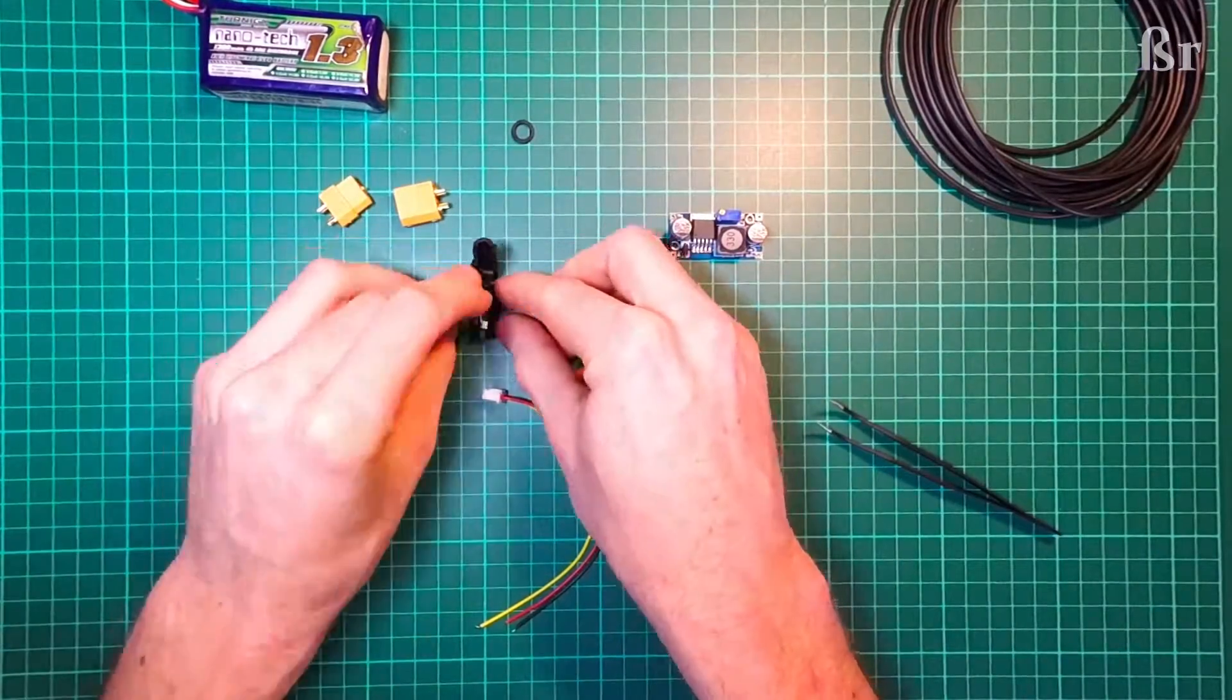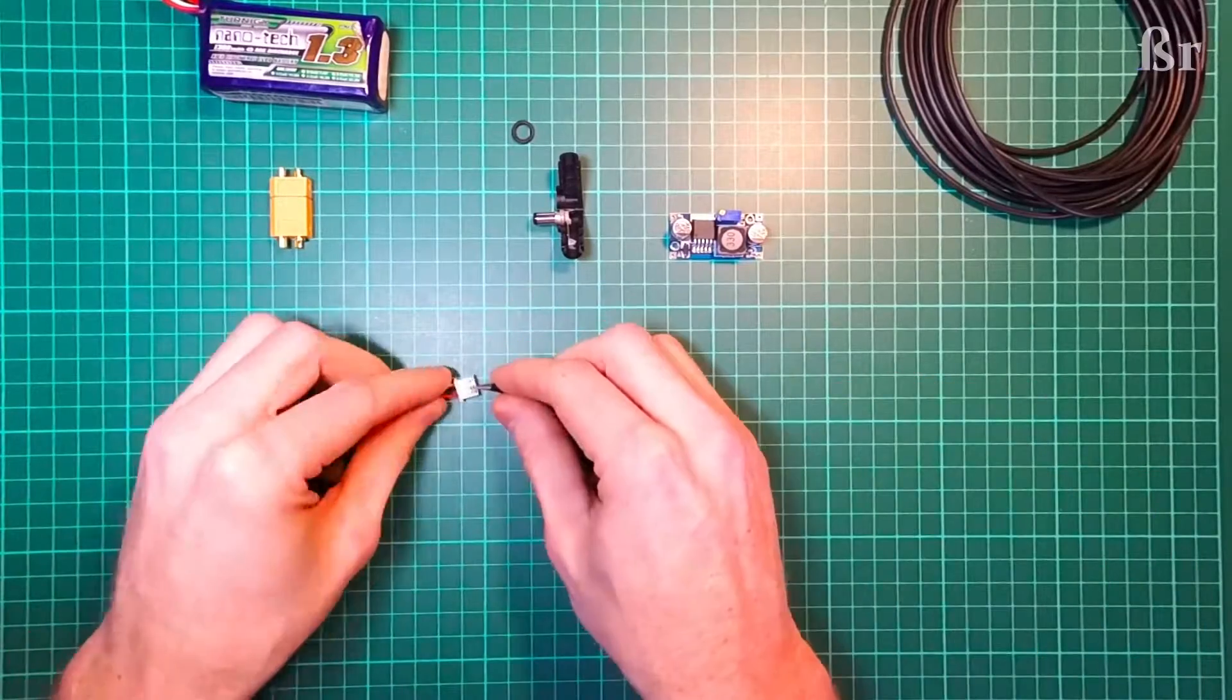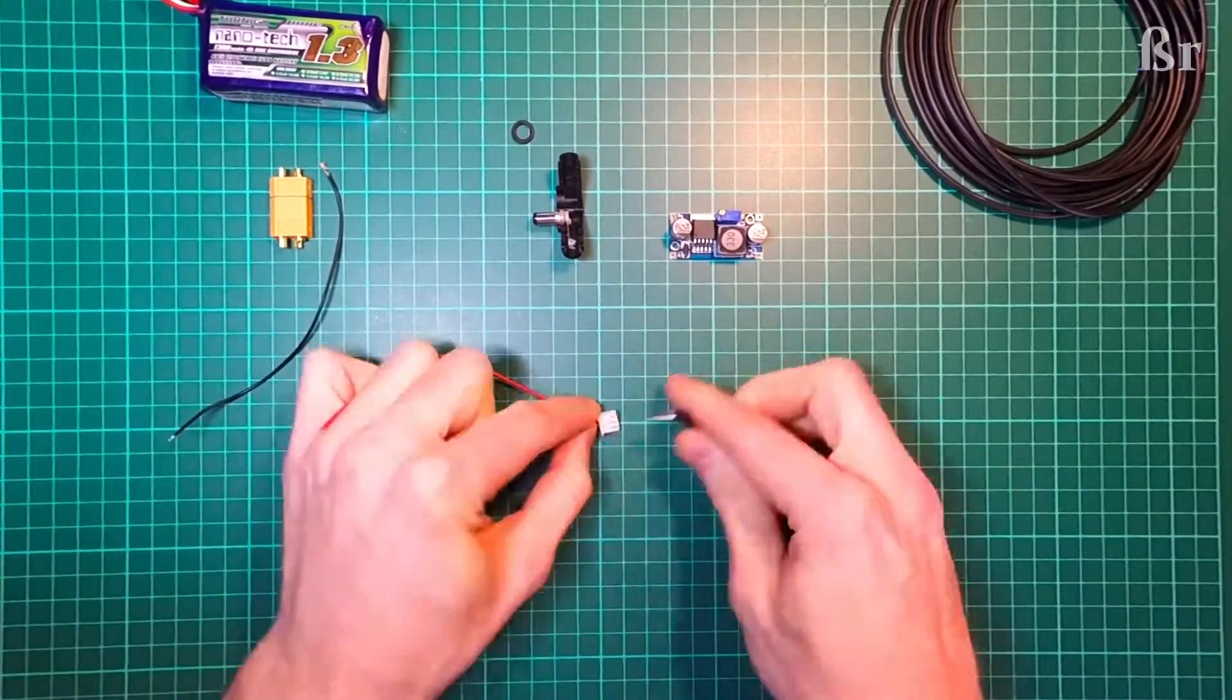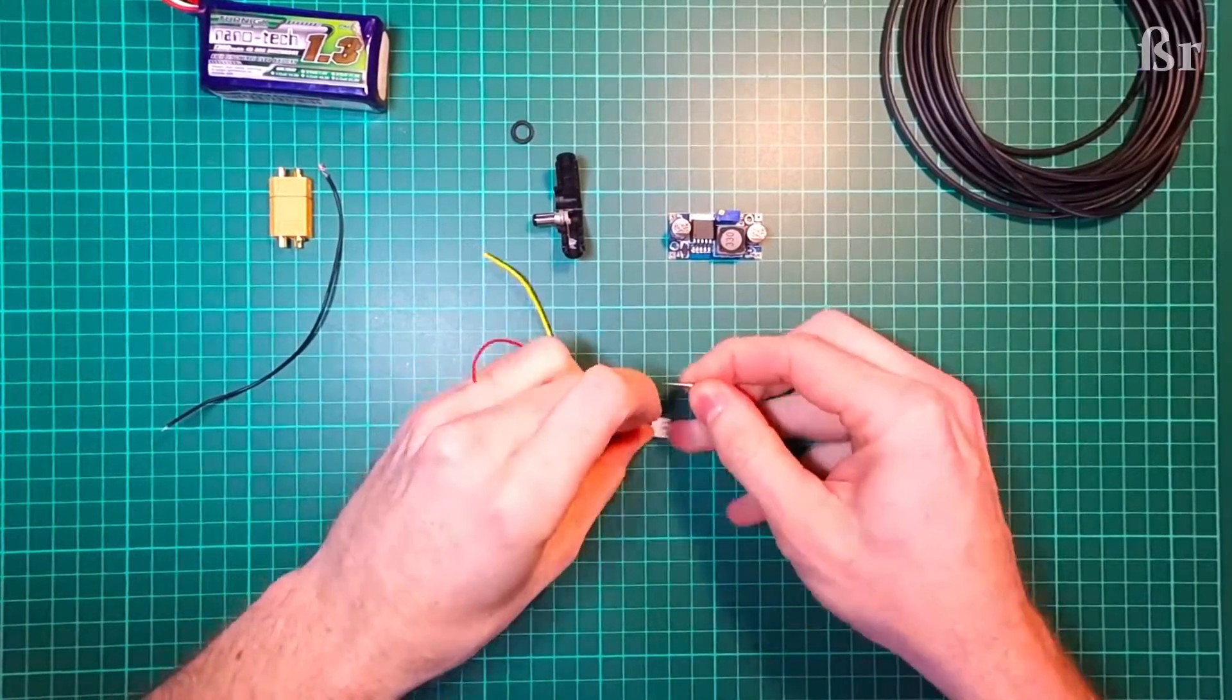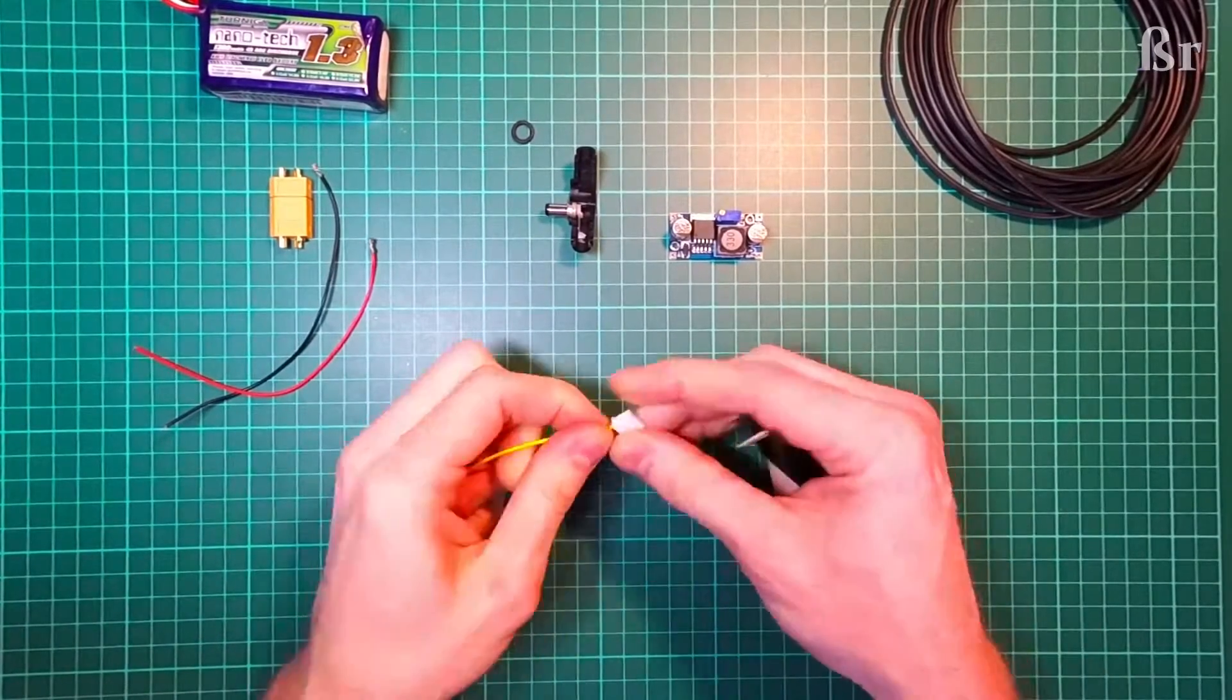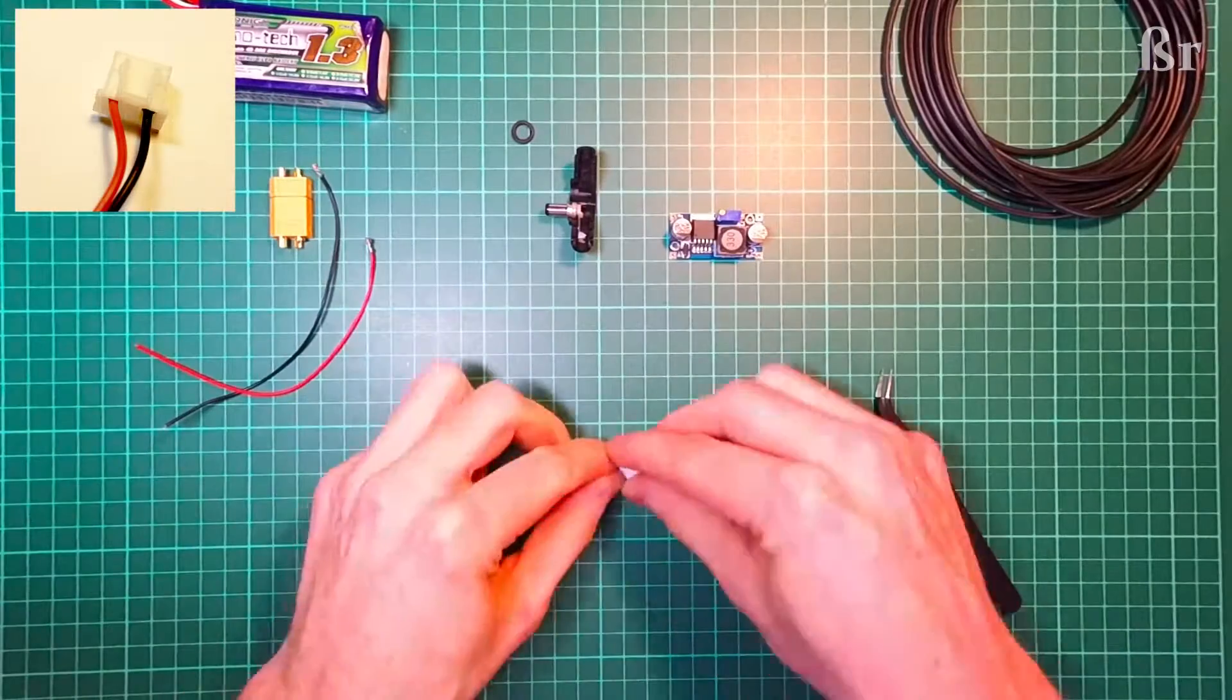We'll get started by modifying the 2S balance lead, also known as the JST XH2S. We're going to take out the cables by dropping the pins and then pulling them back. We're only going to need the cables on the outermost edges of this balance connector.